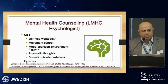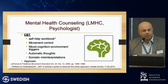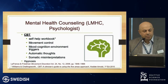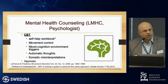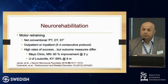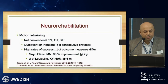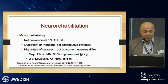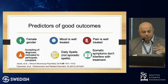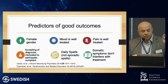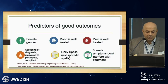Two modalities for treatment of functional movement disorder: cognitive behavioral therapy, with self-help workbooks, and neurological rehabilitation called motor retraining, where we work with physical therapists to retrain the brain. Hypnosis is not used or available very commonly. Mayo Clinic and University of Louisville showed motor retraining can be very effective. Predictors of good outcomes include female gender, well-treated mood and pain, acceptance of the diagnosis, daily rather than monthly spells, and not a lot of somatic symptoms like dizziness or vertigo.